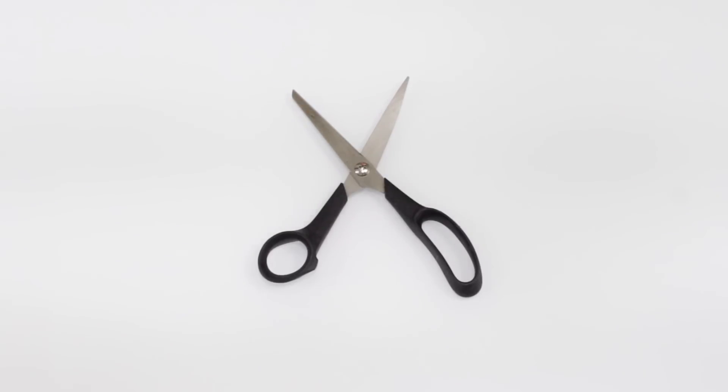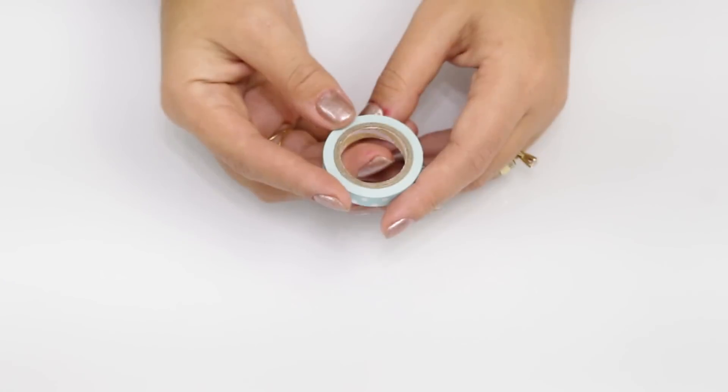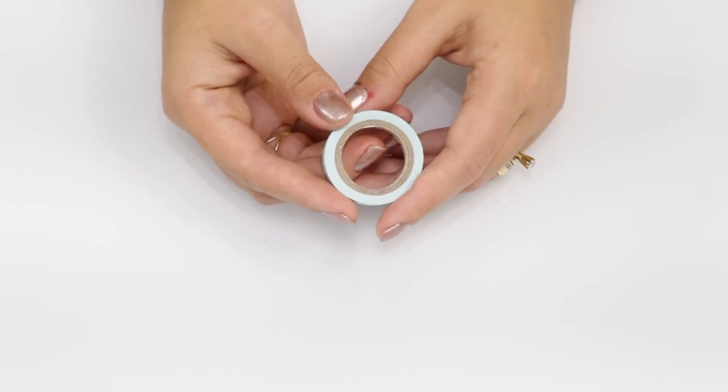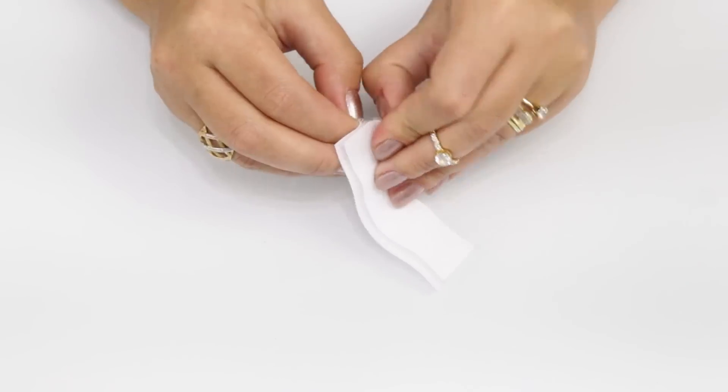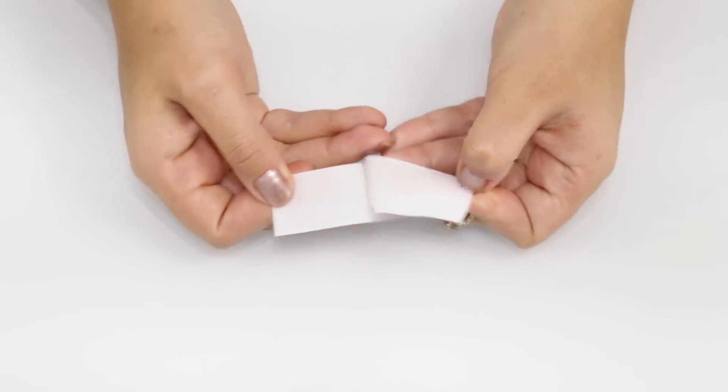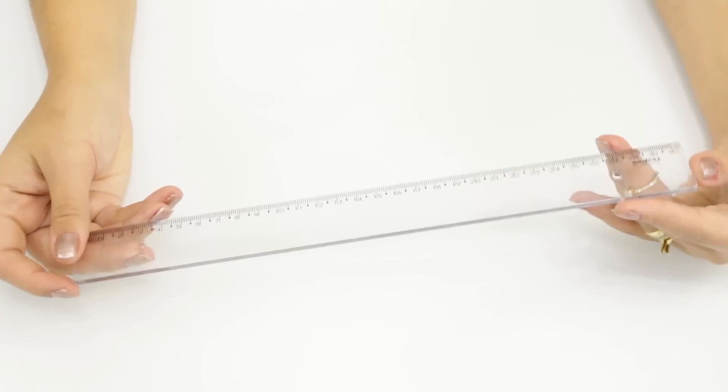E pra fazer o nosso estojo de cauda de sereia, nós vamos precisar de retalhos de feltro na cor azul, de um pedaço de papelão ou cartolina, cola quente, tesoura, lápis. Mais uma vez, de um molde redondo pra poder fazer as escamas da sereia, um pedacinho de velcro e régua.